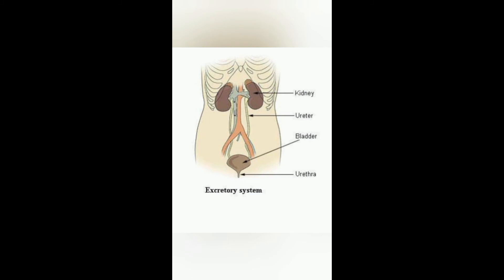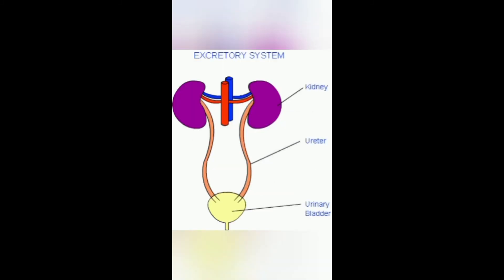Next we have the excretory system. The excretory system contains the kidneys, blood vessels, ureter, and urinary bladder. Our body works all the time and produces a lot of waste material. This waste is mixed with the blood, which is harmful for the body. Hence, the organs that remove waste from the blood form the excretory system.